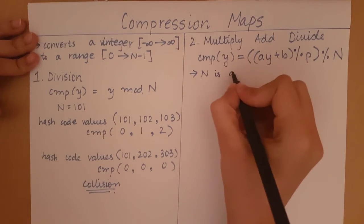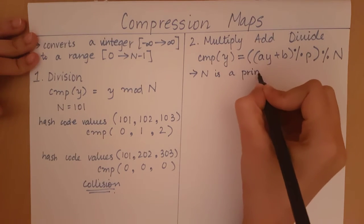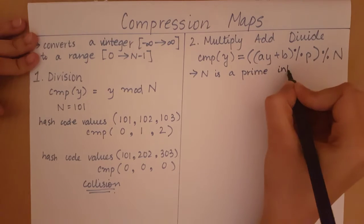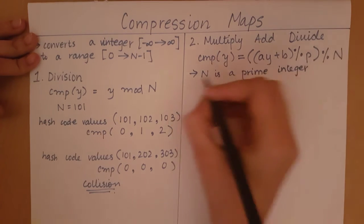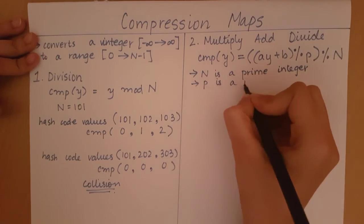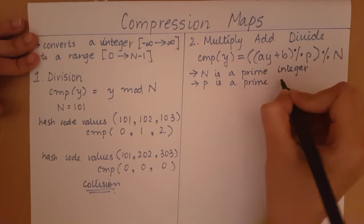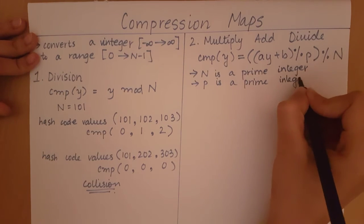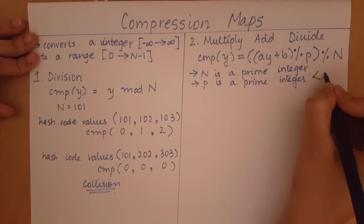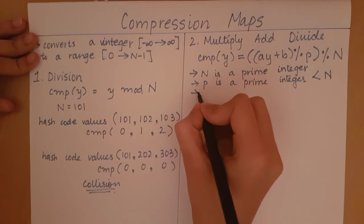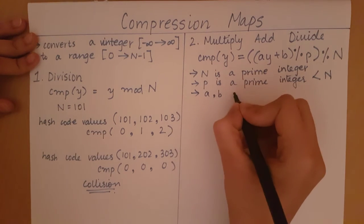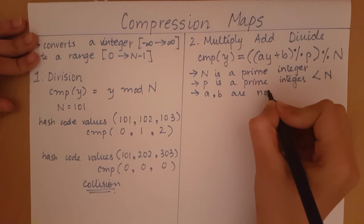n is a prime integer. p is a prime integer which is less than n. And a and b are non-zero constants.